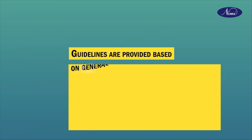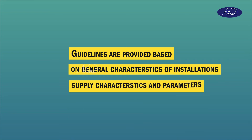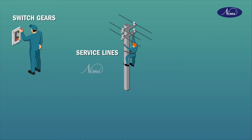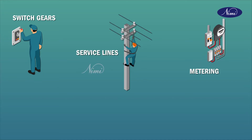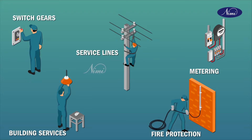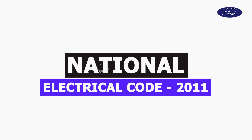The NEC guidelines are provided based on installation characteristics, supply characteristics and parameters, and also cover switchgear for control and protection, supply lines, earthing, metering, services, fire protection, and miscellaneous aspects.